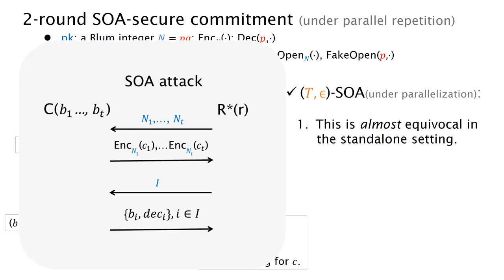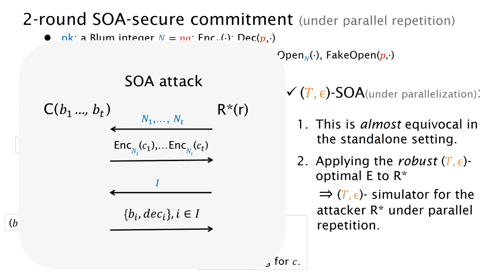And then in this setting we can pretend that an arbitrary B and the commitment is a valid opening for some commitment C, which may not be related to the plaintext encrypted in the ciphertext sent by the sender in the committing phase. Now we take a close look at the SOS attack in which the adversary receiver R-star is allowed to initiate T sessions for some polynomial T. And it sends T public keys N, and then the sender sends back T commitments. After that, the receiver R-star asks the sender to open a subset of these commitments. And now we can apply the robust T-epsilon optimal extractor to such a receiver R-star. And combining the observations, the first observations, we will have T-epsilon simulatability for the attack on the parallel repetition.